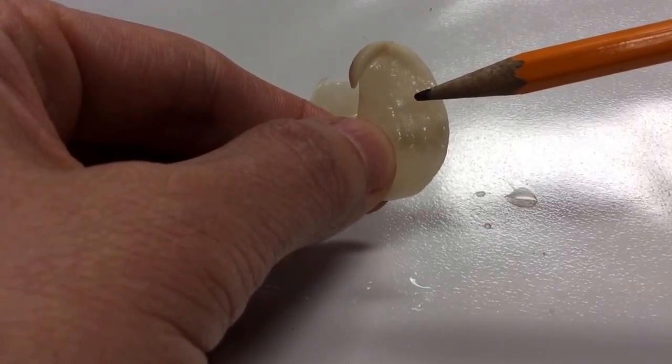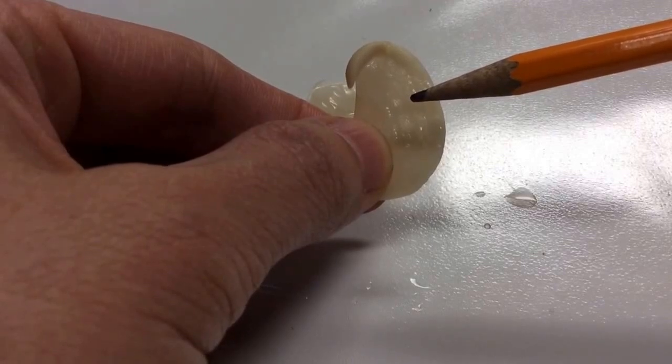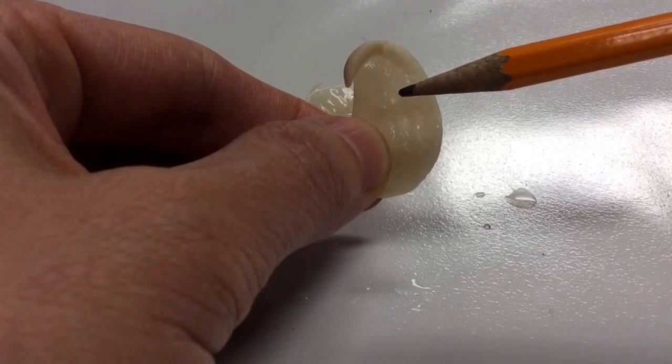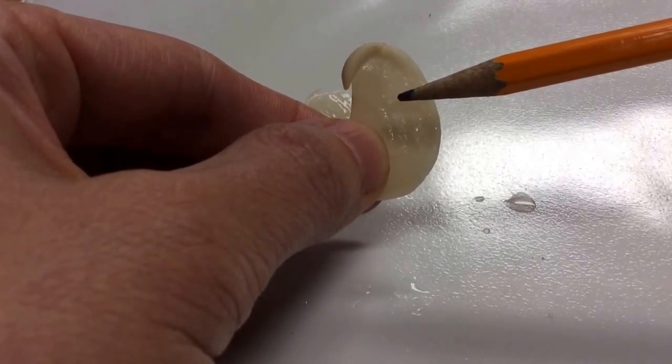Not all seeds have cotyledon. For example, lettuce seeds are really tiny and you'll see some of those today. They don't have their own food supply so they have to be planted close to the light source, but lima beans do, so this is the cotyledon and it's the food supply for the bean.